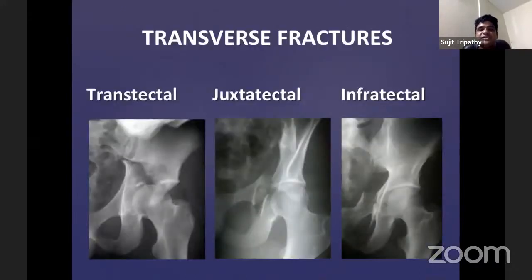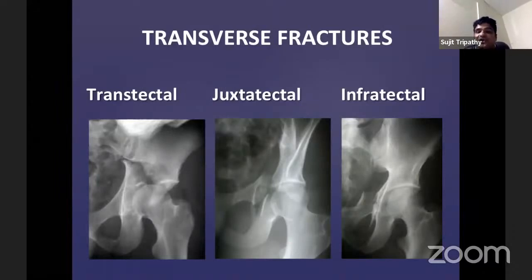In the transtectal type, the femoral head or hip joint is in the direction of the ischiopubic segment — medially displaced. The imaging clearly demonstrates the fracture pattern and medial displacement of the femoral head.